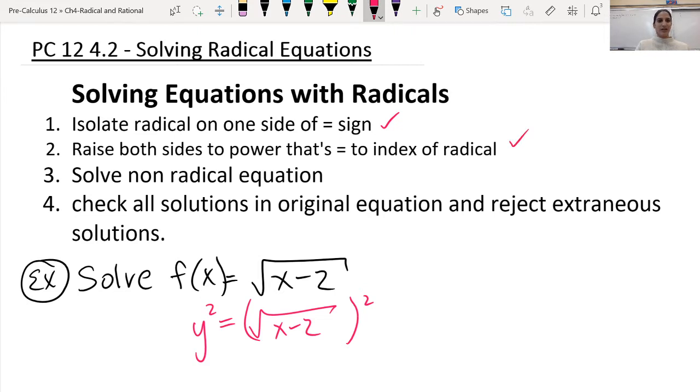And solve the non-radical equation. Okay, so y squared is equal to x minus 2, because squaring something that's square rooted is just gone.